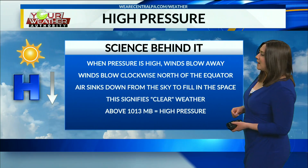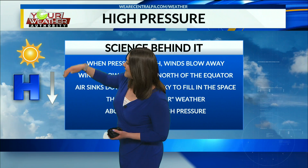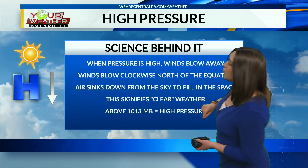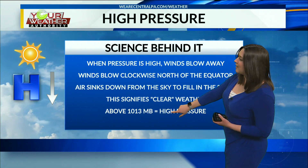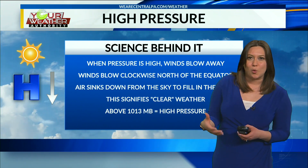Let's talk about high pressure. When pressure is high, winds blow away from that high pressure system — clockwise around a high in the northern hemisphere. Air is sinking down from the sky to fill in that area of high pressure. With that air sinking down and moving out of the high, that's why we see clearer weather. High pressure means clear weather, and it occurs at 1013 millibars or above.